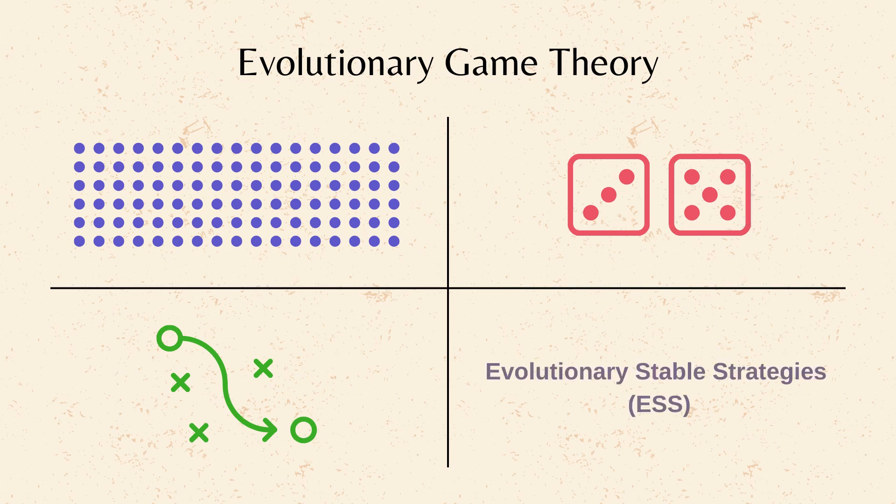Evolutionary Stable Strategies, or ESS, are strategies that, once dominant in a population, cannot be invaded by alternative strategies.